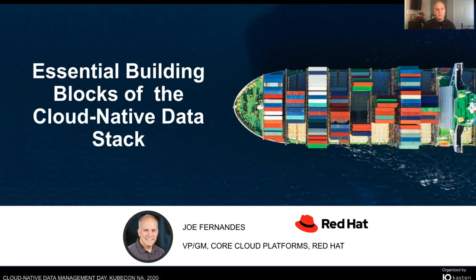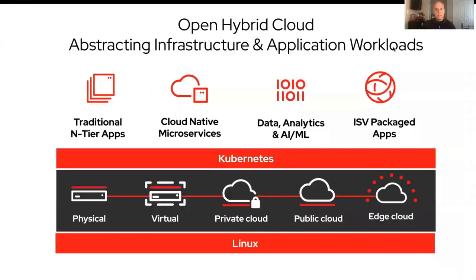I'm going to talk about the essential building blocks of the cloud native data stack. My name is Joe Fernandes — Vice President and General Manager of Cloud Platforms at Red Hat, which includes our OpenShift Kubernetes platform. Before I get into this topic, I want to talk about what these cloud native platforms are for. I think about this in two domains. First, the Kubernetes platform is about abstracting the underlying infrastructure. Users today are running applications on a diverse array of infrastructure: physical bare metal servers, virtualization platforms like vSphere or Hyper-V, private cloud platforms like OpenStack, and increasingly public clouds like Amazon, Azure, and Google.